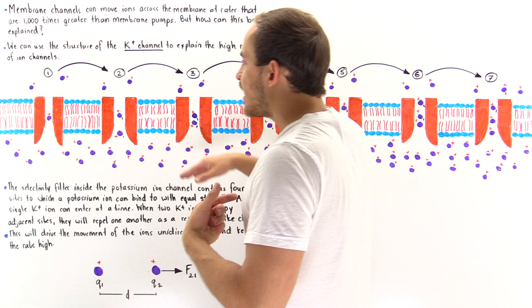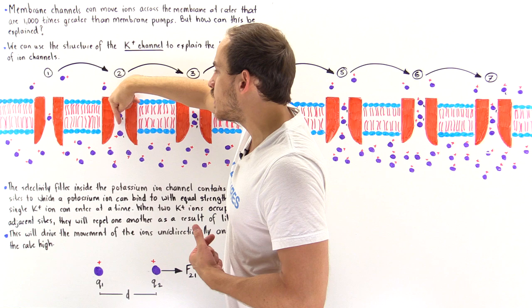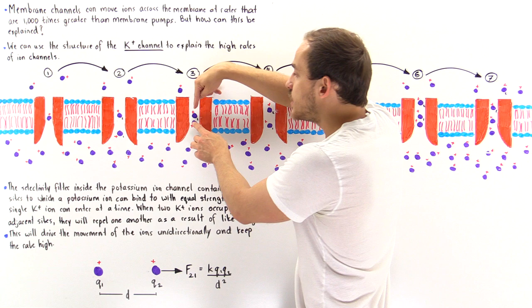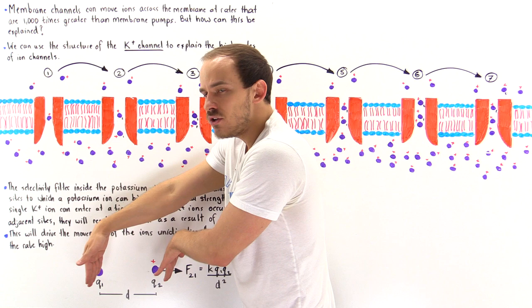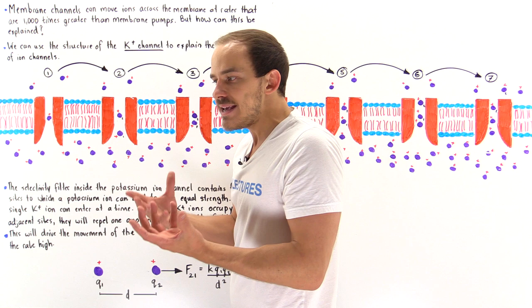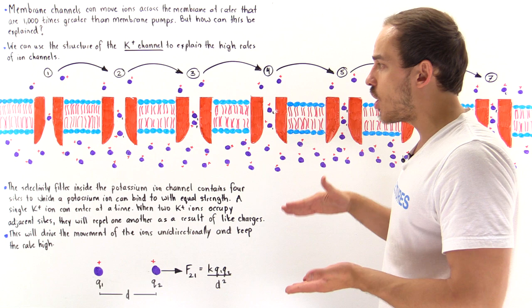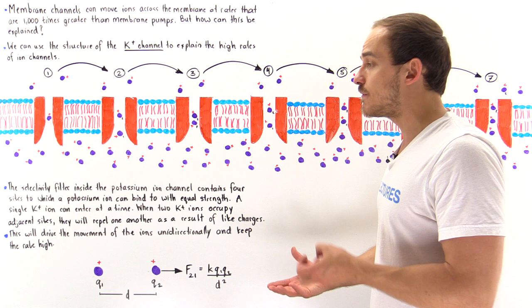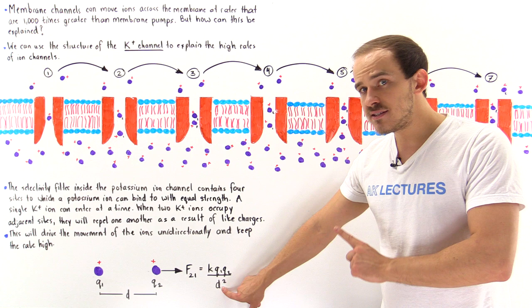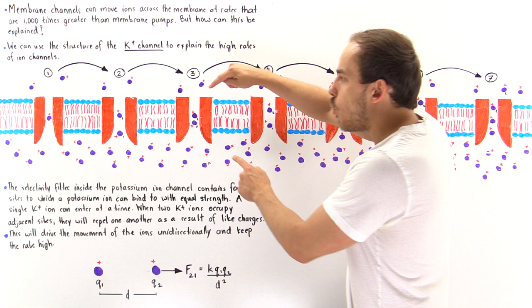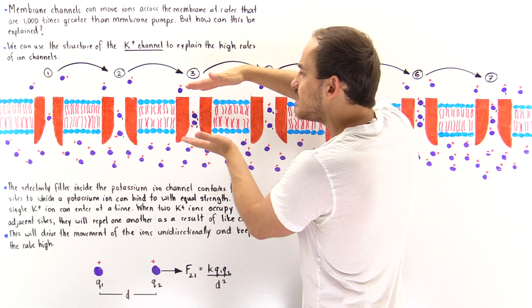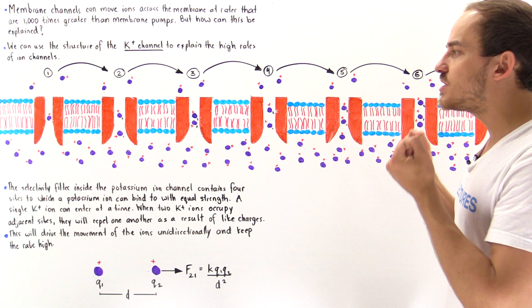When the second ion moves into site two, site one becomes unoccupied, so the first ion moves into site one. Now we have two positive charges in close proximity, separated by a distance d. From basic electromagnetism, they experience an electrostatic force — and the smaller the distance between them, the greater the force. So when these two ions occupy adjacent sites, they experience a strong electrostatic repulsive force.